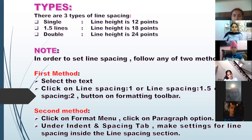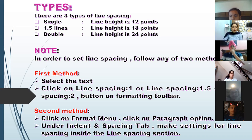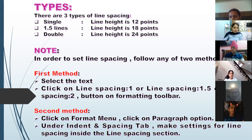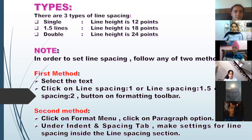The line height for single line spacing is 12 points, for 1.5 line spacing is 18 points, and for double is 24 points. The commonly used method is from the formatting toolbar — select the text and choose the desired line spacing option. An alternative method with more options is from the format menu: format menu, paragraph option. Under the indent and line spacing tabs, you choose the line spacing section.